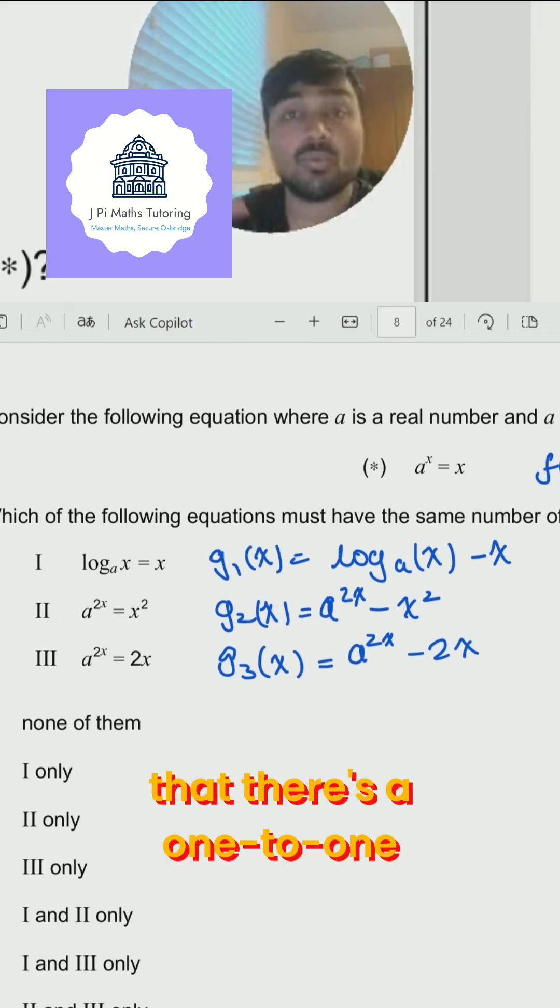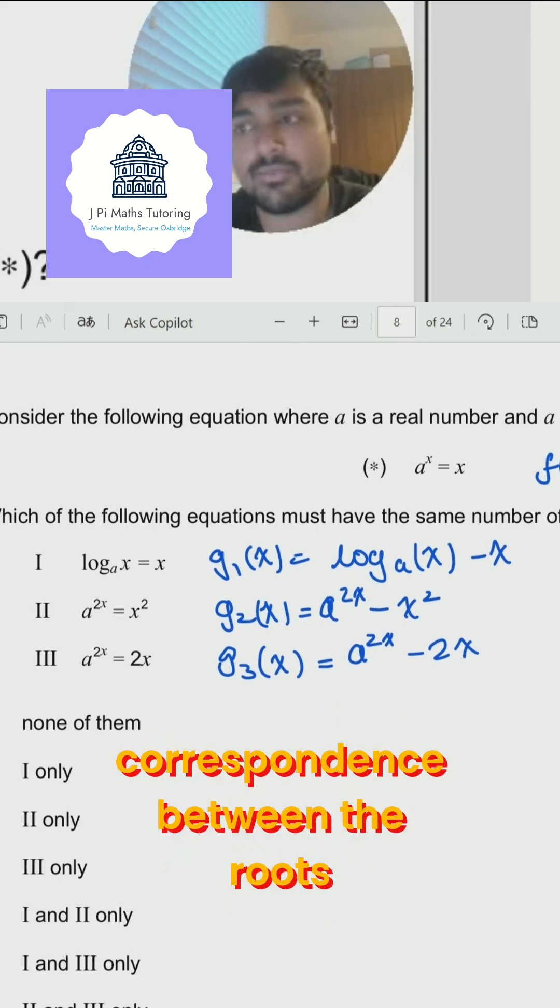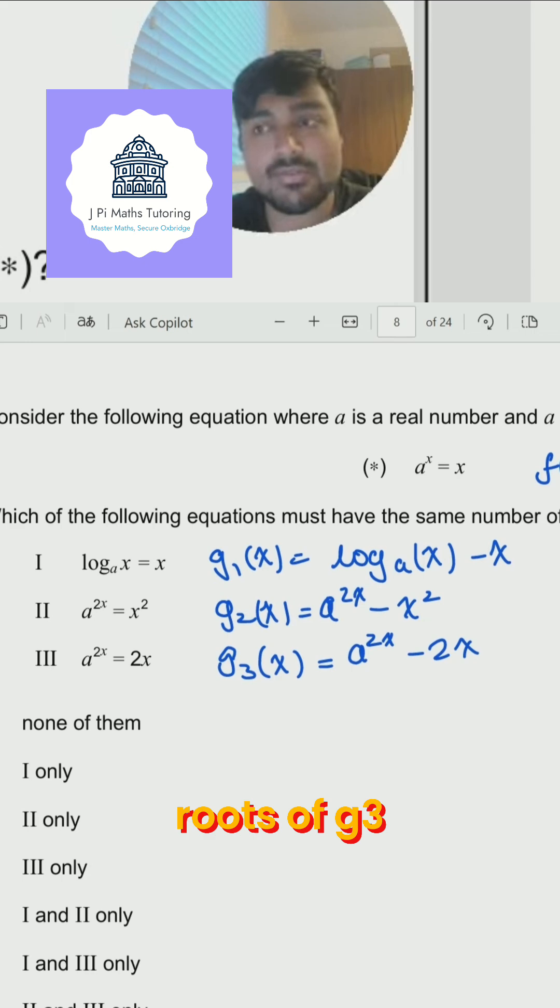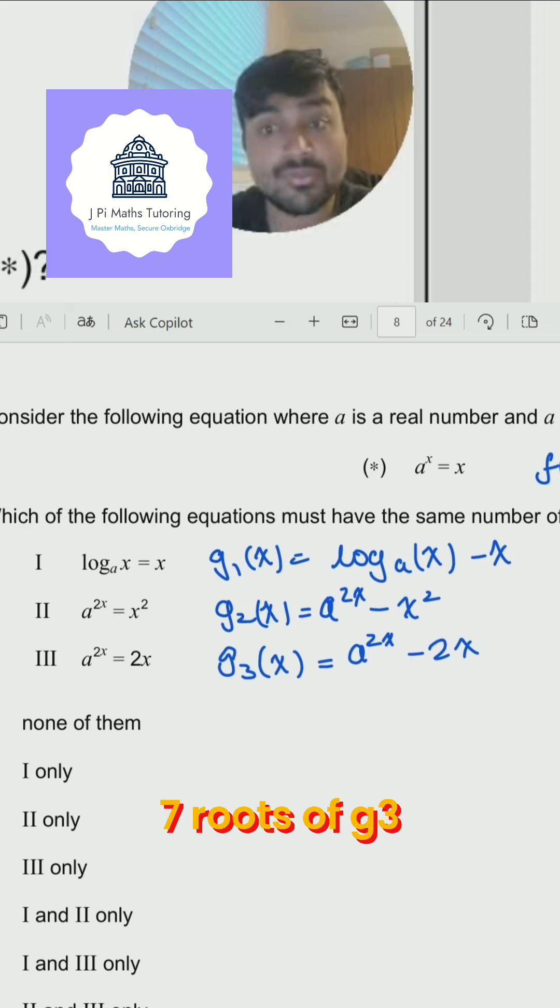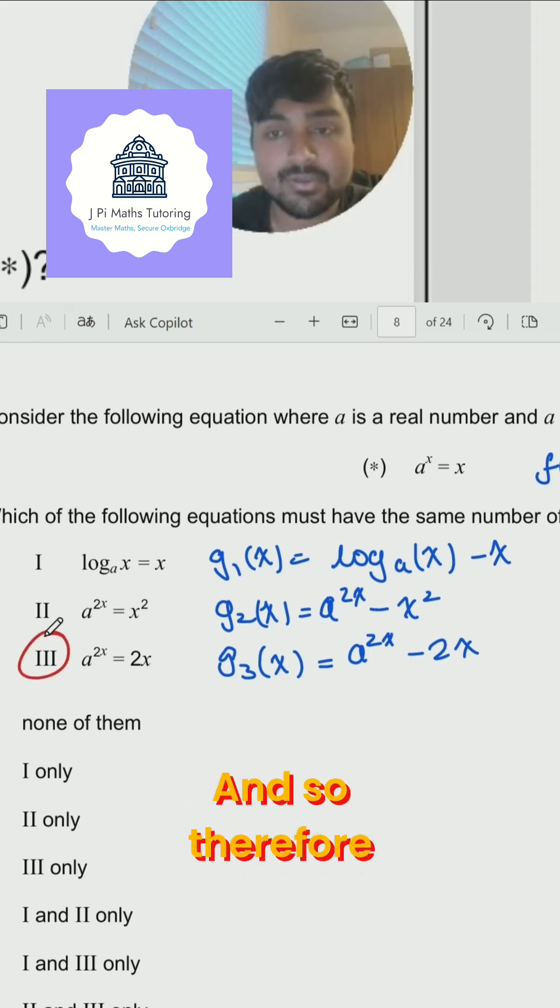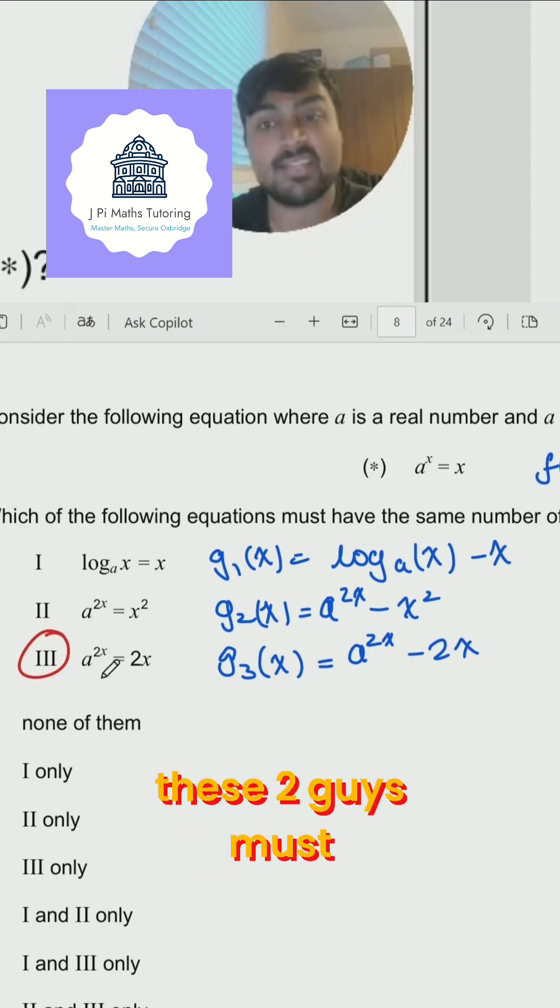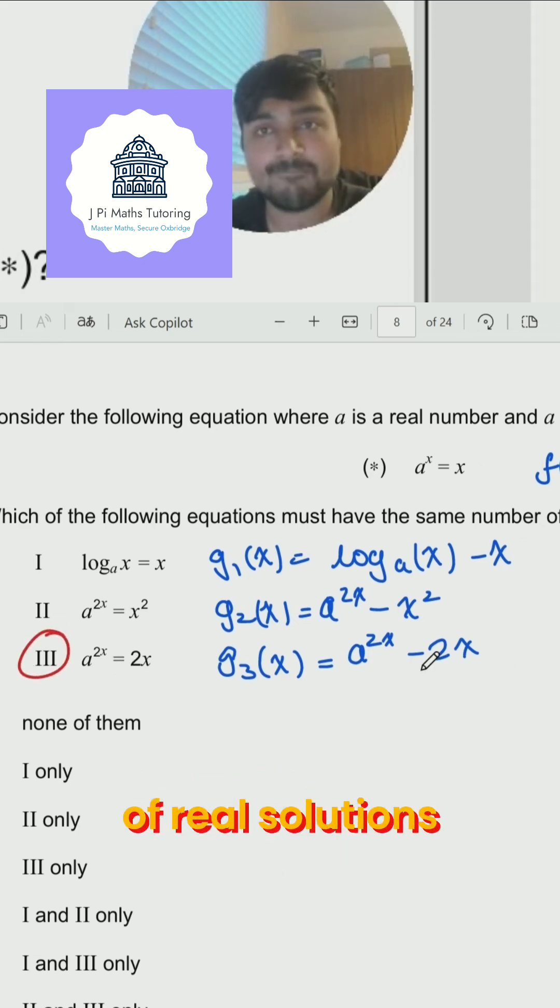And so this means that there's a one to one correspondence between the roots of f and the roots of g3. So if there are seven roots of f, then if I half all those numbers, I'm going to get the seven roots of g3. And so therefore, these two guys must have the same number of real solutions. Great.